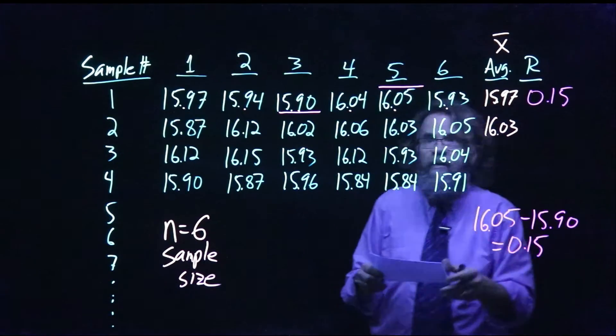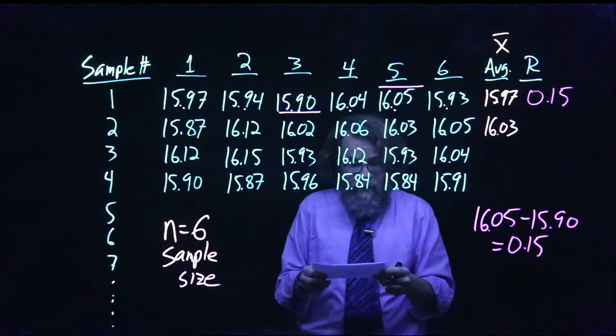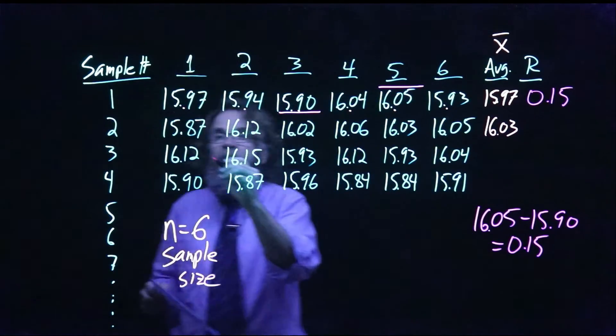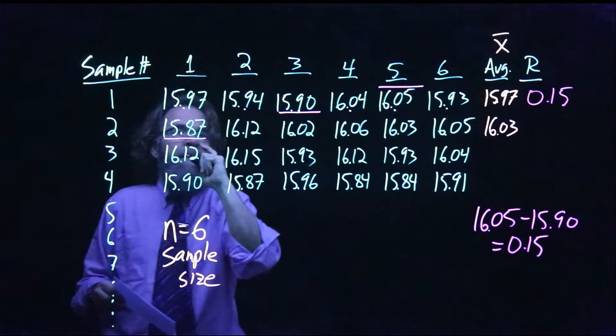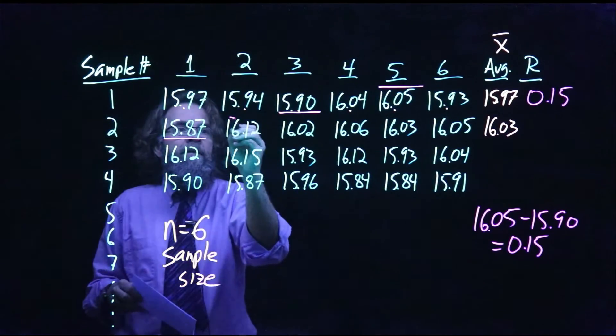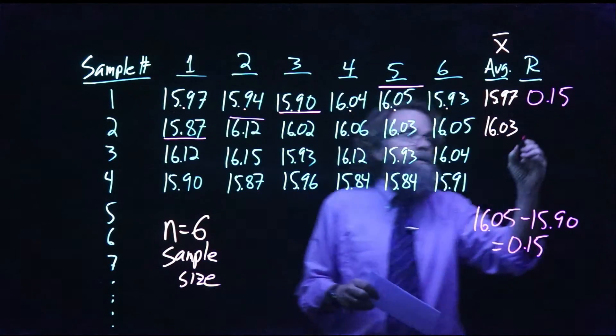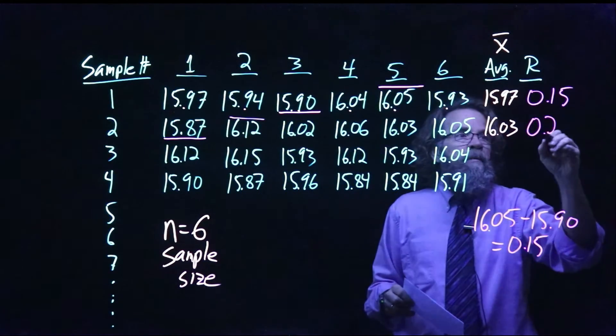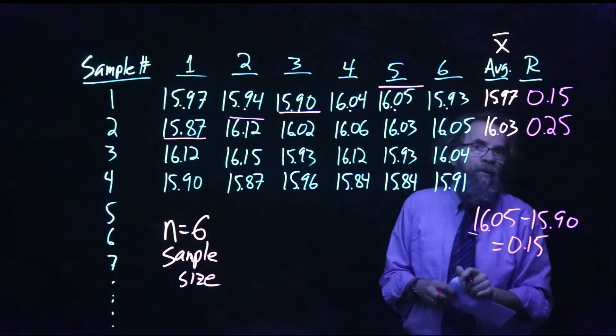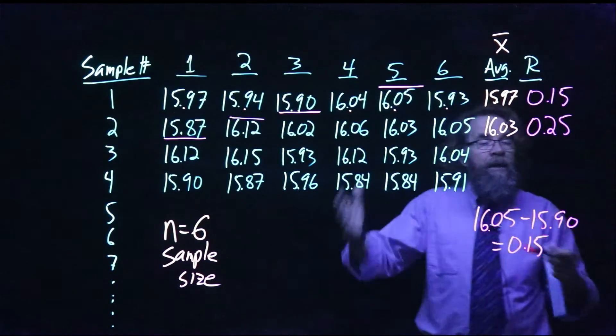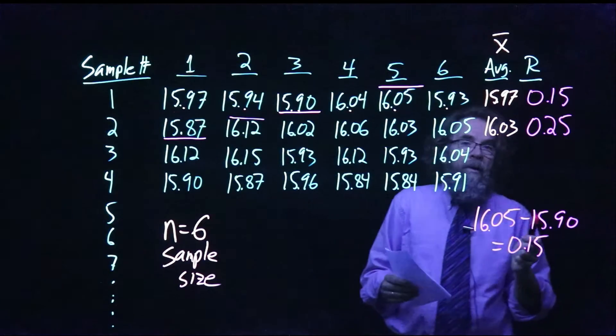Then our next one, if we look here, we have 15.87 as our smallest and we have 16.12 as our largest. So if we take the difference between the biggest one and the smallest one, we get a range value of 0.25, and we just keep on going.